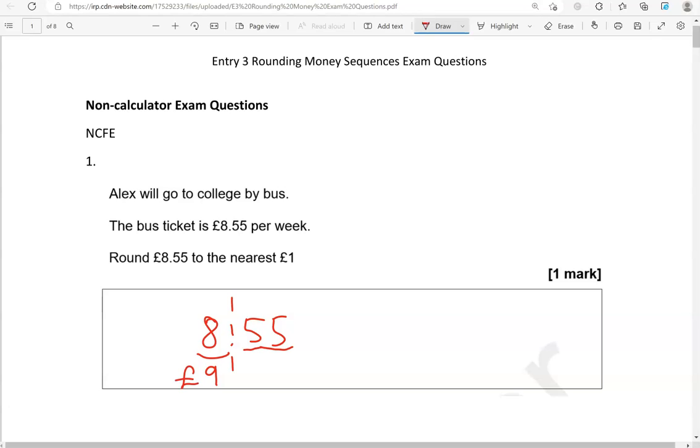Anything below 50 pence, like 49 pence, 48, 0 pence, that means rounding down. So we would go to £8. So in this case, we rounded this to £9.